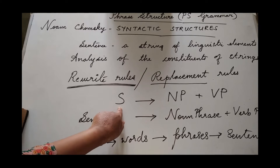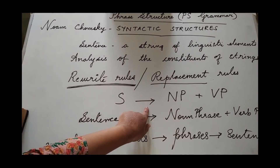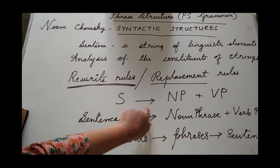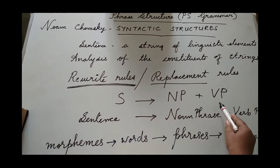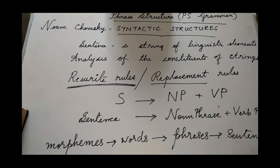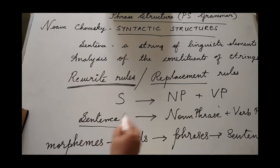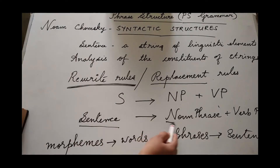This is a simple rewrite rule: S is equal to NP plus VP. So what is S? S refers to the sentence. NP refers to the noun phrase, and VP refers to the verb phrase.